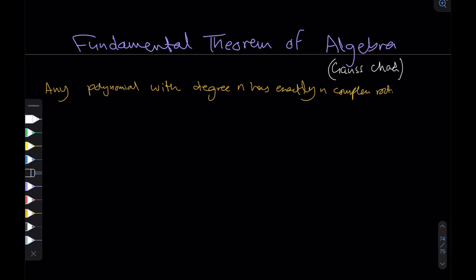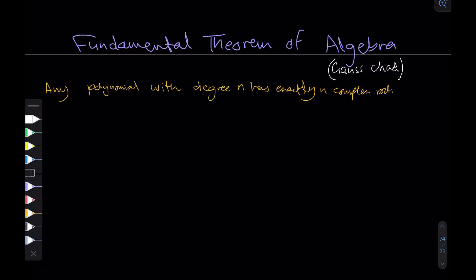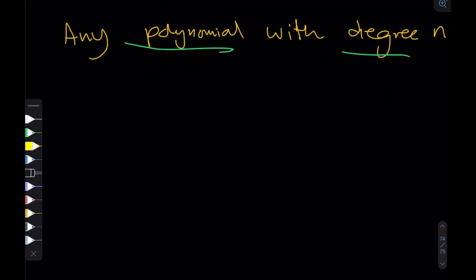I came across a really simple but beautiful proof of the Fundamental Theorem of Algebra. It is a theorem by none other than Gauss himself, and it says that any polynomial with degree n has exactly n complex roots. Before going on with the proof, which actually contains zero lines of algebra, I'll break down some of the terms, and we'll also see the geometric interpretation of what multiplication really is.